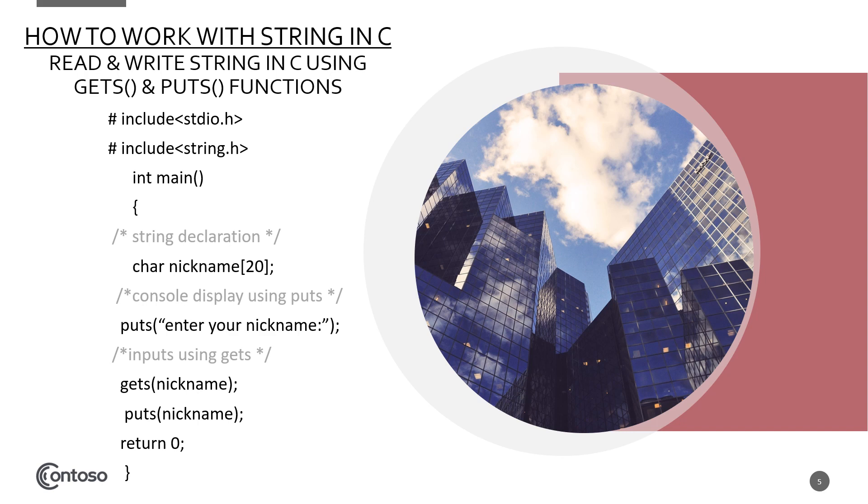Here, char nickname 20, char is a data type, nickname is the name of variable and size is 20. It is a string declaration. Puts enter your nickname. Gets nickname is the input using gets and then puts nickname will display the output. When you run this code you will get the output as your nickname, whatever you enter from your keyboard.